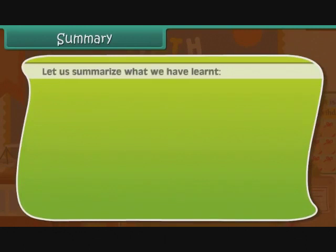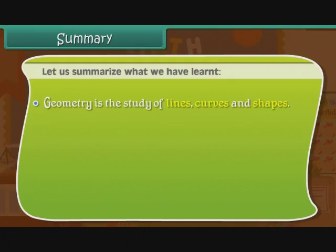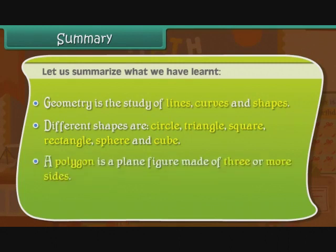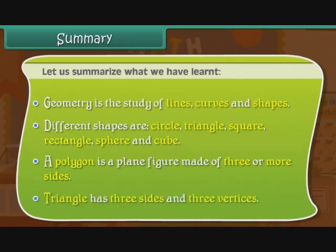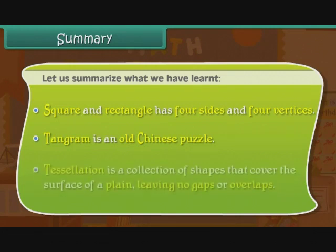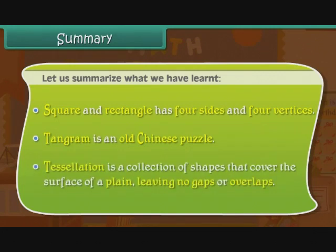Let us summarize what you have learned. Geometry is the study of lines, curves, and shapes. Different shapes are circle, triangle, square, rectangle, sphere, and cube. A polygon is a plane figure made of three or more sides. Triangle has three sides and three vertices. Square and rectangle have four sides and four vertices. Tangram is an old Chinese puzzle, and tessellation is a collection of shapes that cover the surface of a plane, leaving no gaps or overlaps.